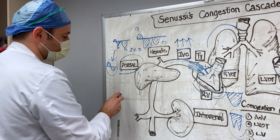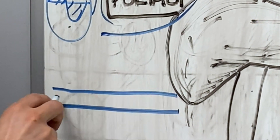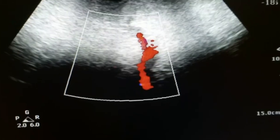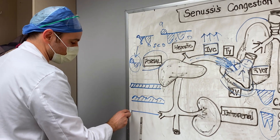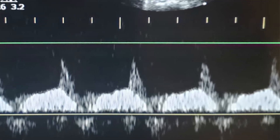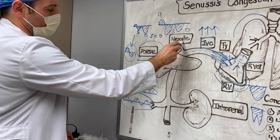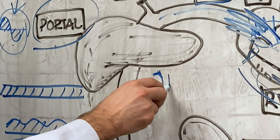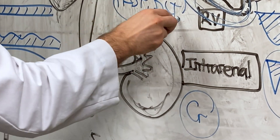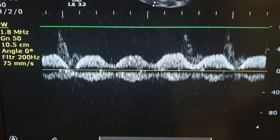In the portal system, normal flow is monophasic — like a venous hum or a little waterfall. As fluid builds up and patients become more congested, pulsatility develops. Completely biphasic portal vein waveforms indicate that the splanchnic circulation is fully congested. Biochemically, this manifests as rising AST, ALT, and creatinine — all due to congestion. These patients need diuresis or other forms of volume removal such as renal replacement therapy. A combination of hepatic and portal vein Doppler informs the decision to diurese.